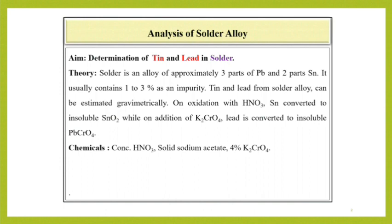Tin and lead from solder alloy can be estimated gravimetrically. On oxidation with HNO3, tin is converted to insoluble SnO2, while on addition of K2CrO4, lead is converted to insoluble PbCrO4.